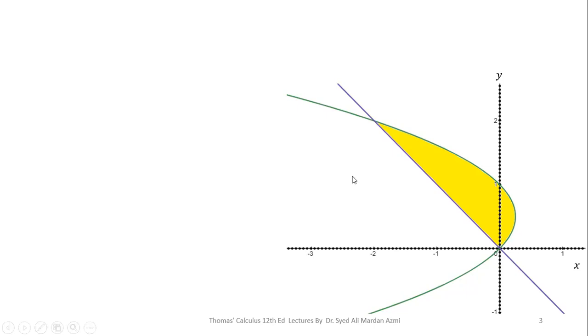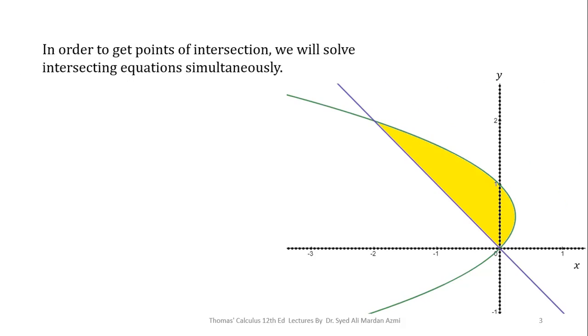In the next step, we will evaluate the coordinates of this point which is the point of intersection of parabola and straight line. For this purpose, we will solve the equations simultaneously: equation of parabola and equation of straight line.